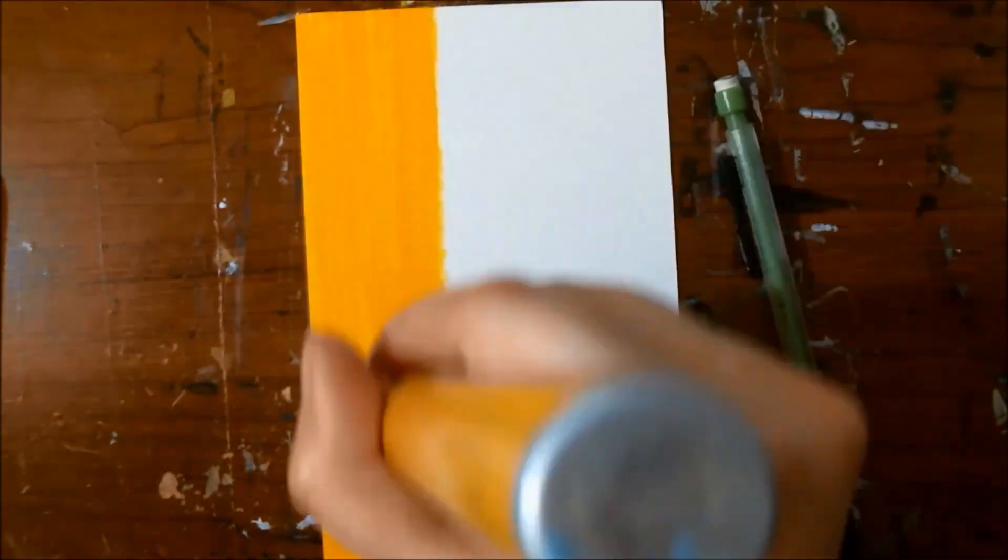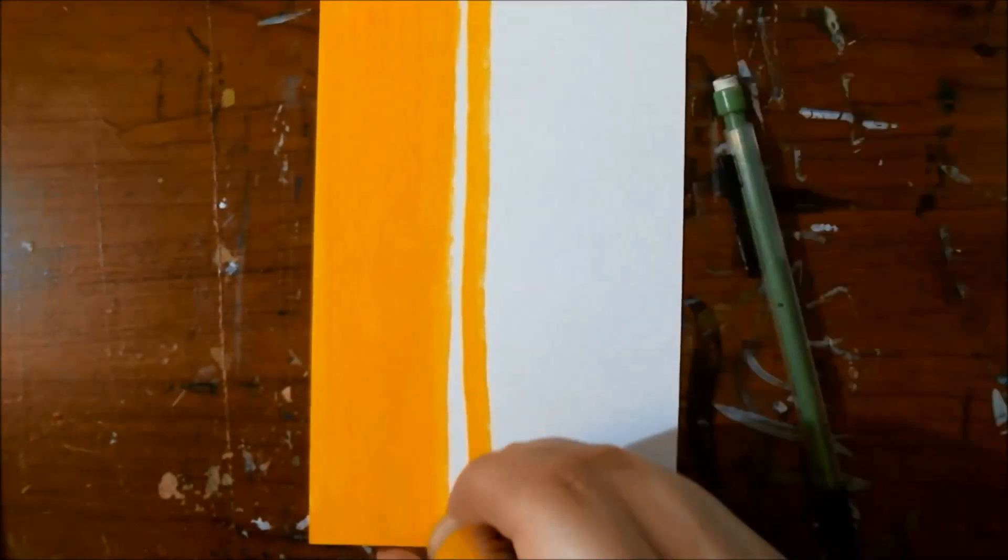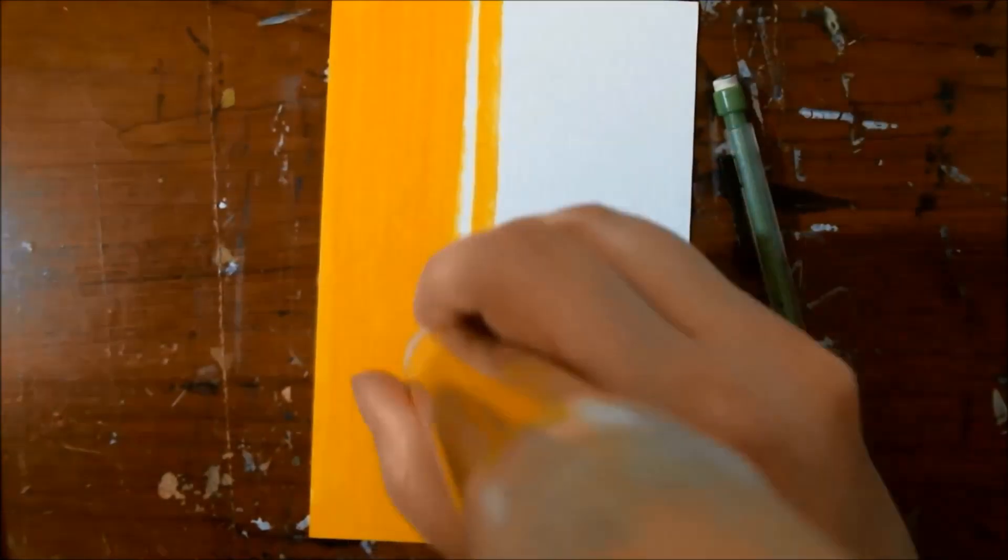Today we are continuing Inktober. It is day 27 and the prompt for today is Coat. I had two different thoughts immediately. One was to do Georgie from It and the other was to do the Ghost from Dark Water.